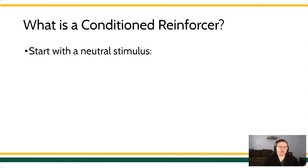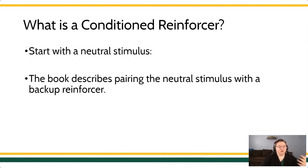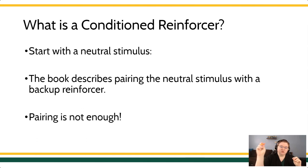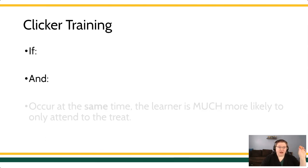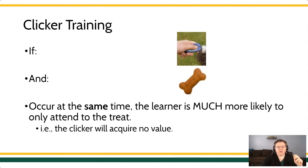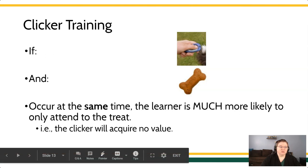With conditioned reinforcers, you start with a neutral stimulus, provide it, and then deliver the backup reinforcer. Your textbook describes this as pairing a neutral stimulus with a backup reinforcer — but pairing is not enough. The neutral stimulus must always precede the backup reinforcer; if the order is not right, that conditioned stimulus will not take on value. If you have a clicking noise and a treat delivered at the same time, the learner will pay attention to the treat. But if you have the clicking noise first and then deliver the treat, the clicker will acquire value. Timing matters.